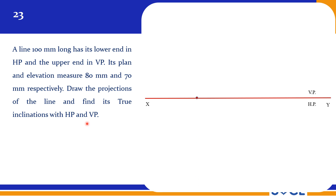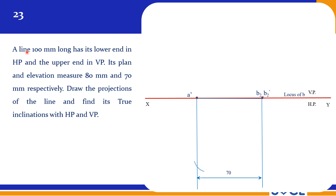This is very similar to the earlier problem. The lower end is on HP, so we consider it as point A. In the front view, we can see point A on the XY reference line — this becomes A dash. The front view elevation is given as 70 mm, and the true length is given as 100 mm.